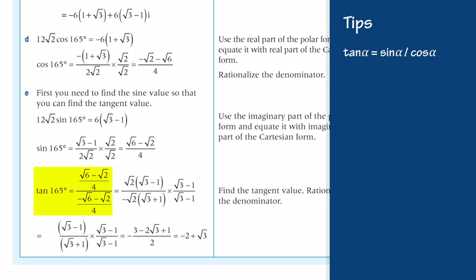Now rewrite the fraction in a simpler form and rationalize the denominator using the conjugate expression. tan(165°) = sin(165°)/cos(165°) = [√2(√3 − 1)] / [√2(√3 + 1)] × (√3 − 1)/(√3 − 1). Reduce by the common factor, multiply the expressions, and simplify: this equals (−3 − 2√3 + 1)/2 = −2 + √3. Therefore tan(165°) = √3 − 2.